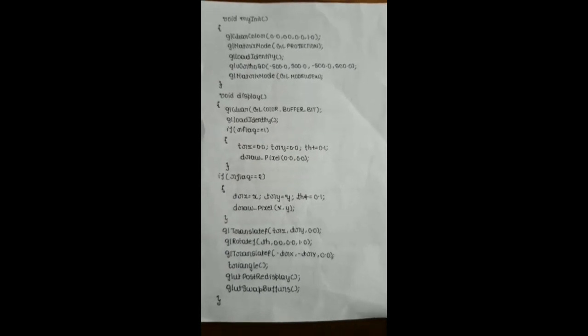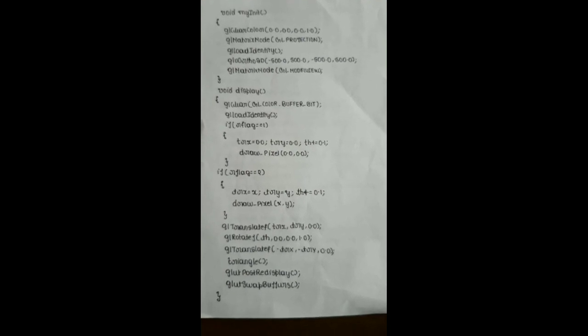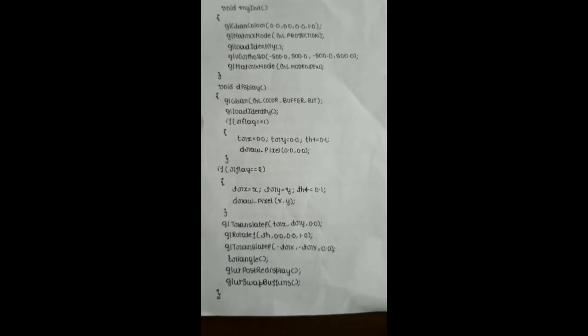To rotate a triangle about a fixed point, we use the CTM method, i.e., the Current Transformation Matrix method. The triangle in affine space is translated to the origin, then rotated by an angle, and then translated back to the affine space.